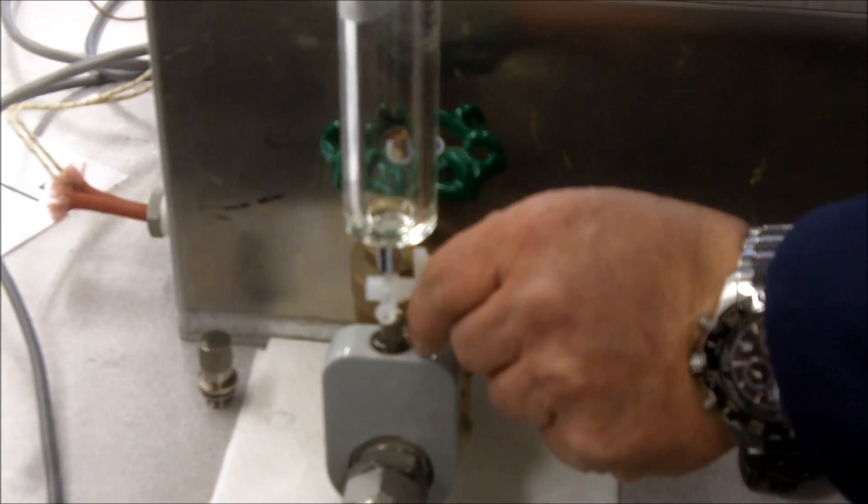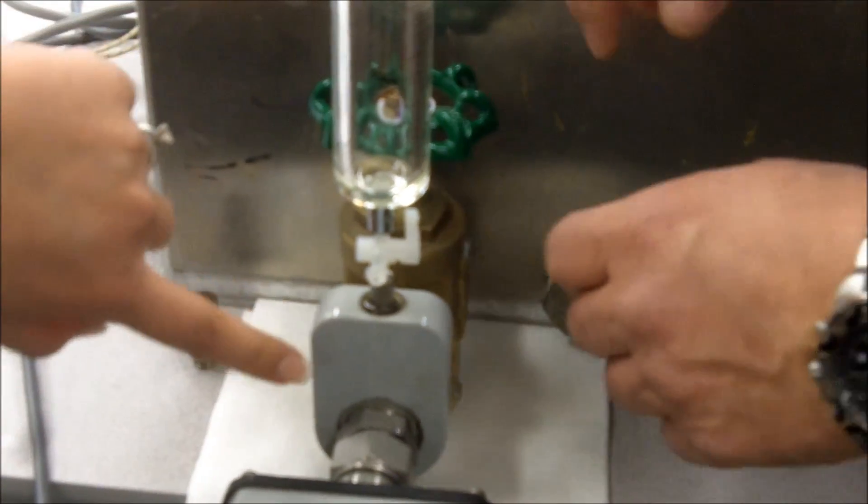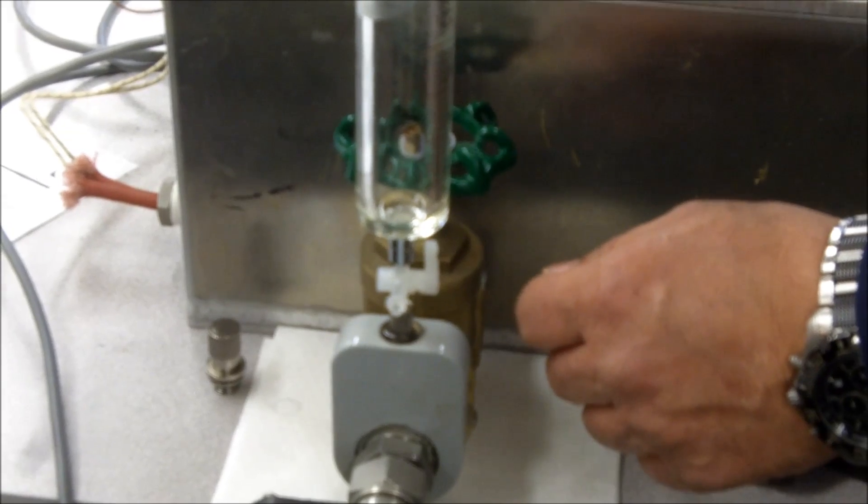Once you feel you have purged the air, do not push the air back in. You always want to make sure you have positive pressure on your transformer before you take an oil sample.